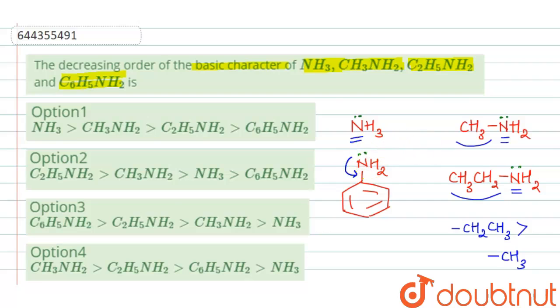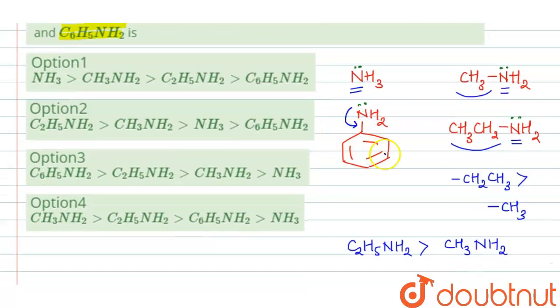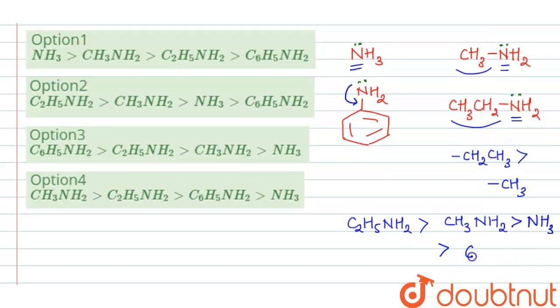So this aniline will be least basic among all these. So then it comes ammonia, and the least basic will be the aniline which is C6H5NH2.